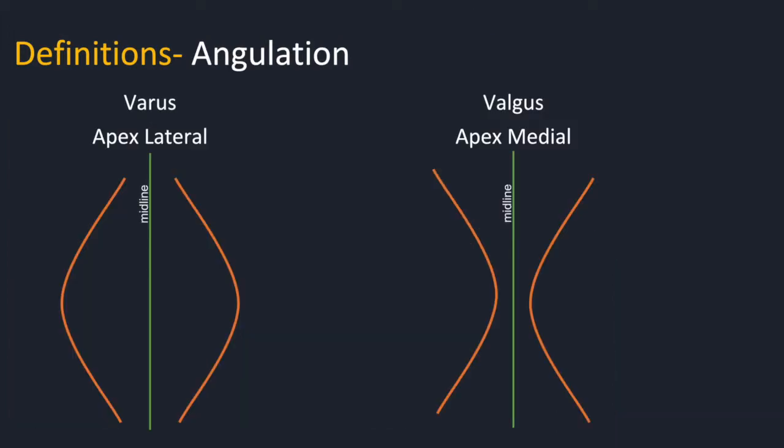There are two ways to describe angulation. My preference is to describe where the apex is — the apex is laterally angulated, or the apex is medially angulated. However, you will also hear varus and valgus. Varus is when the apex of the curve points away from midline, and valgus is when the apex points towards the midline.